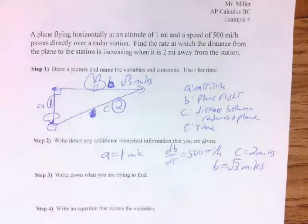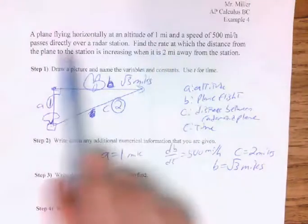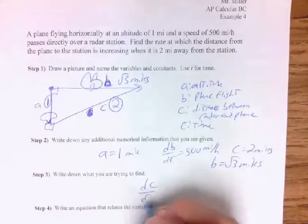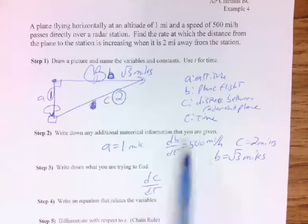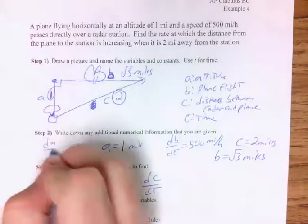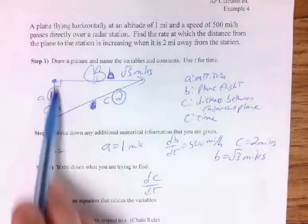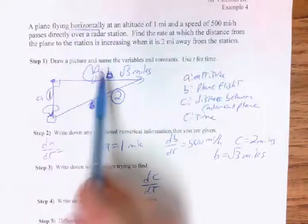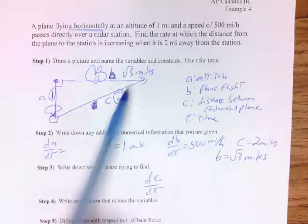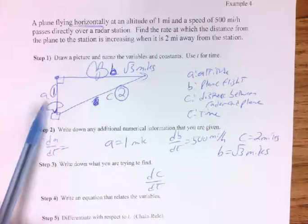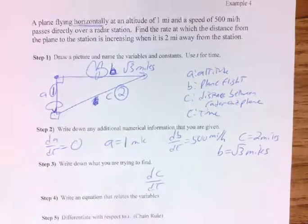We're trying to find dC/dt — the rate at which the distance from the plane to the station is increasing. What about dA/dt? Is the altitude changing? No — it's flying horizontally, so A is constant and dA/dt = 0. The equation relating the variables is A² + B² = C². Differentiating with respect to T: since A is constant, the A² term goes to 0, giving 2B·(dB/dt) = 2C·(dC/dt). The 2's cancel, so B·(dB/dt) = C·(dC/dt).